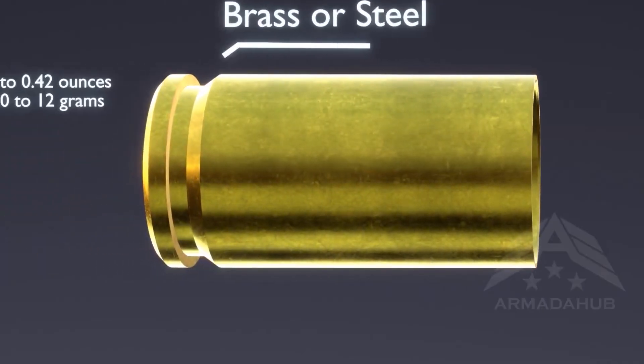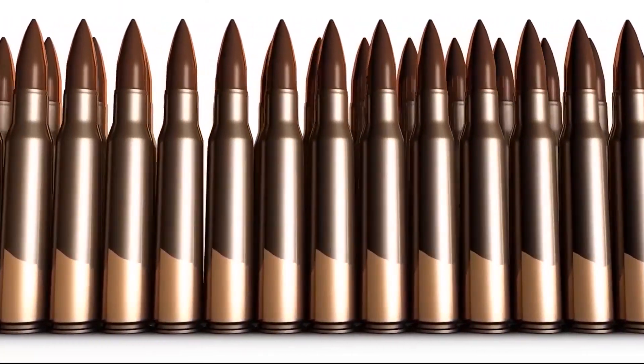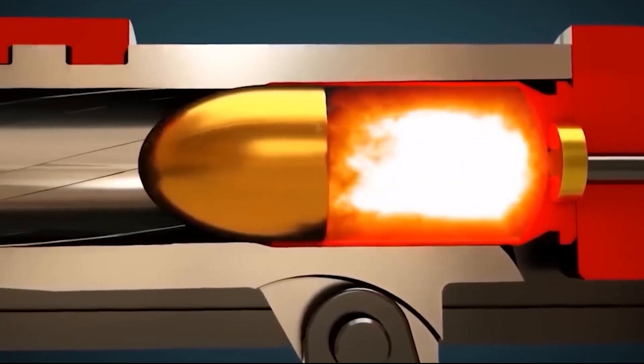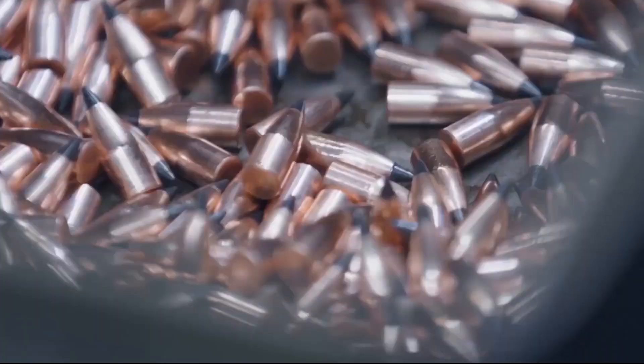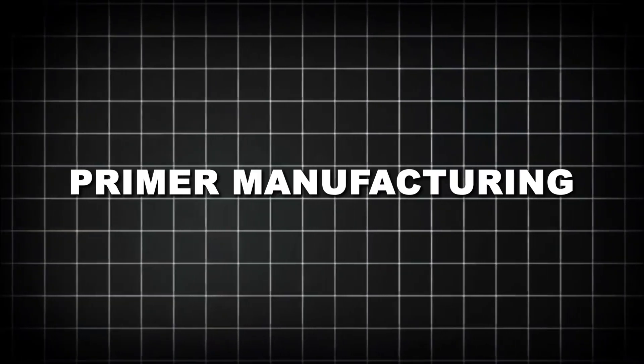At Hornady Manufacturing in Grand Island, Nebraska, specialized machines can produce over 200,000 bullets per shift with tolerances measured to within 0.001 inches. Each bullet is inspected for weight consistency and dimensional accuracy before moving to the loading phase.